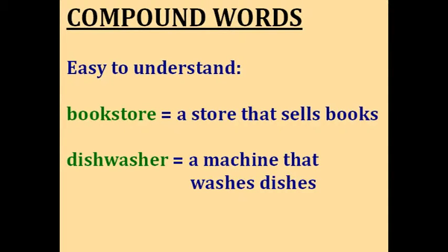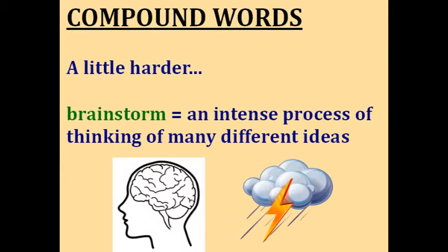Sometimes compound words are easy to understand. A bookstore is a store that sells books — makes sense. And a dishwasher is a machine that washes dishes; maybe you have one in your kitchen. But others might not be so obvious. For example, brainstorm: to brainstorm is an intense process where you think of many different ideas in the hopes of getting a good idea. You can see it comes from the word brain and storm — when there's a thunderstorm, it rains a lot, so in the same way, when you brainstorm, you think of a lot of ideas.